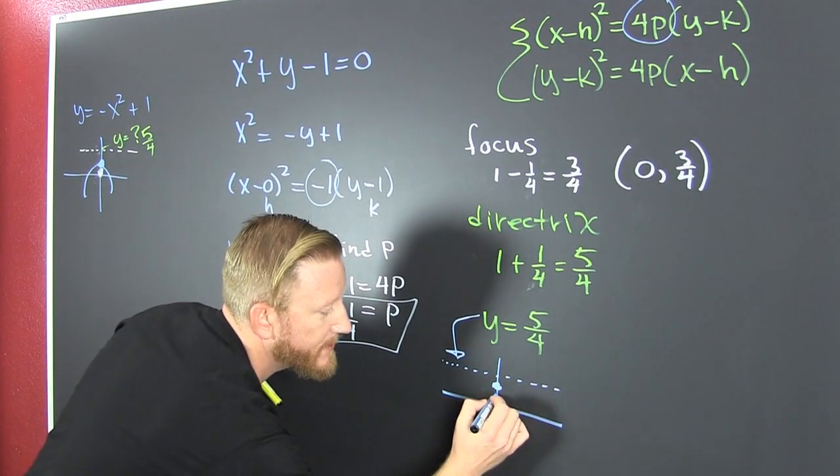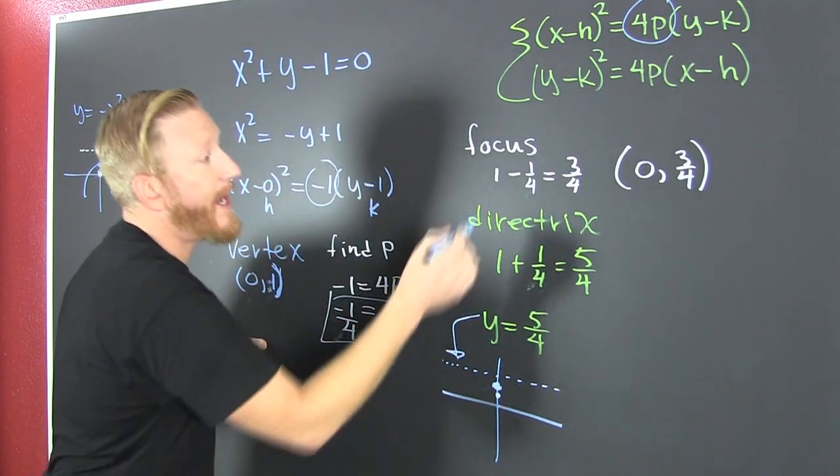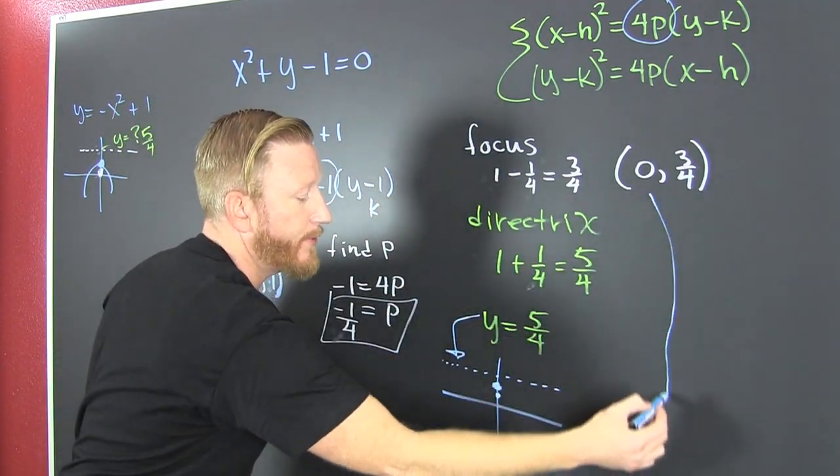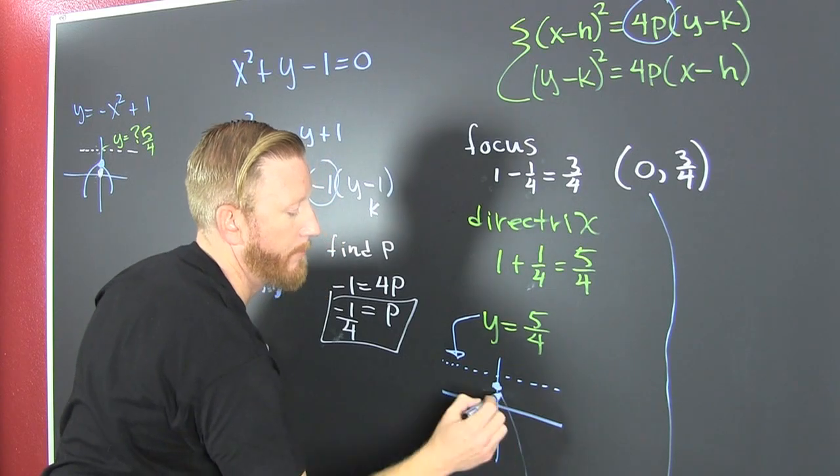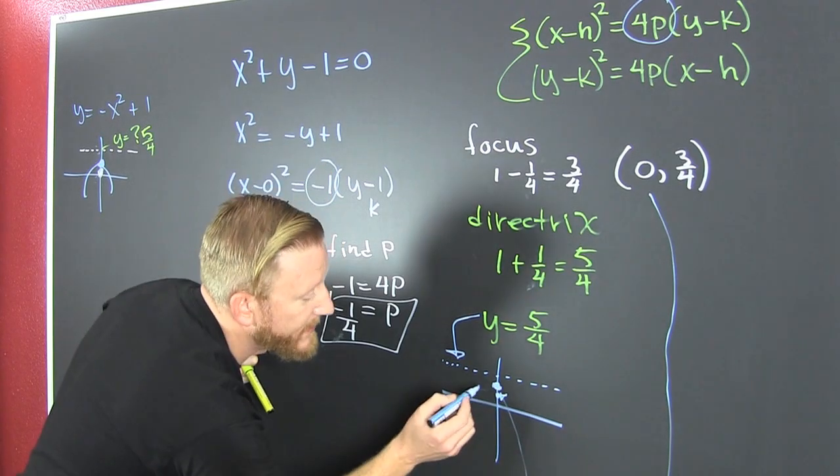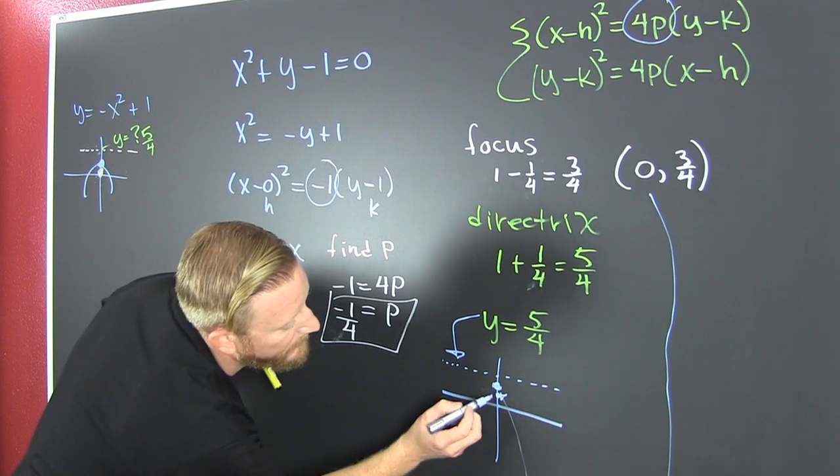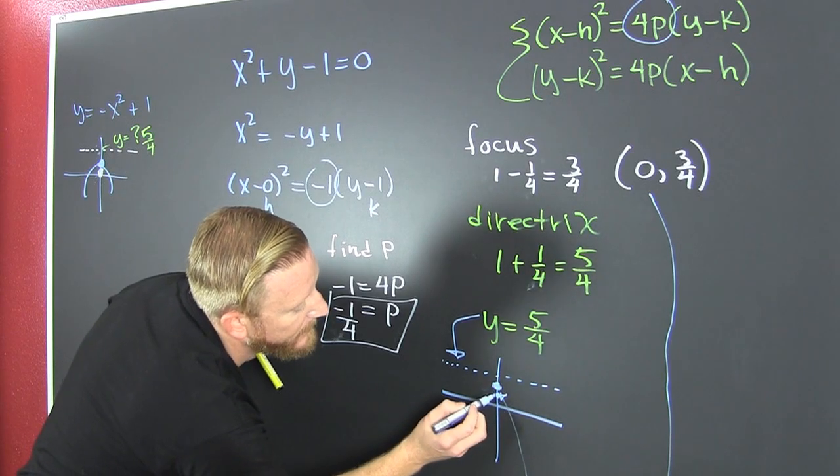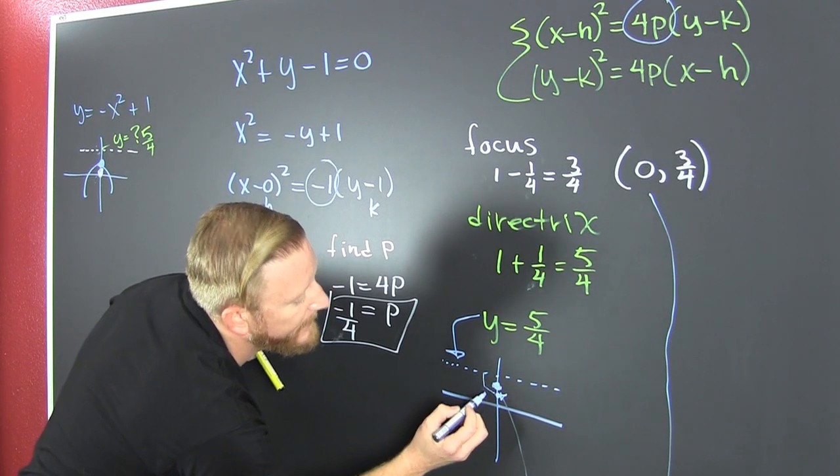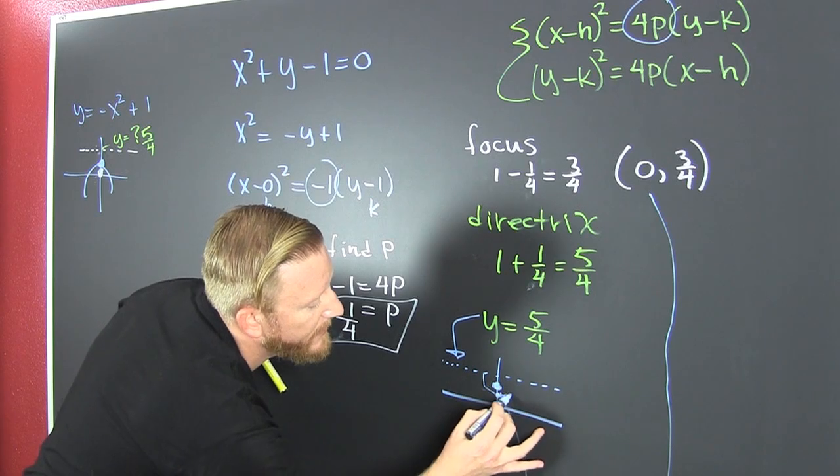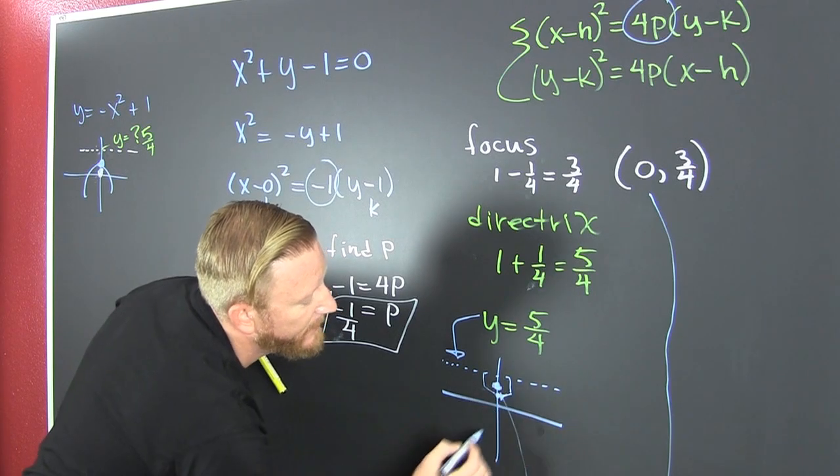And then what's this? That's my focus. So then it's all points equal distance from that dot and this guy. So this and that. Those look equal. And this and that. Those look equal.